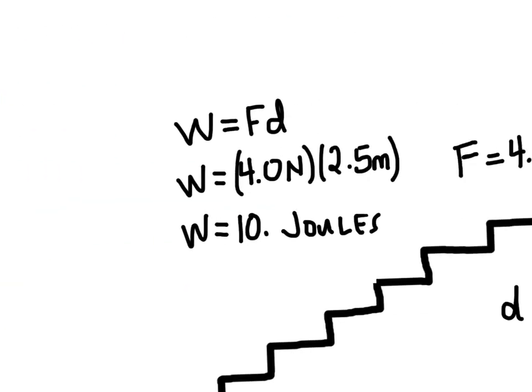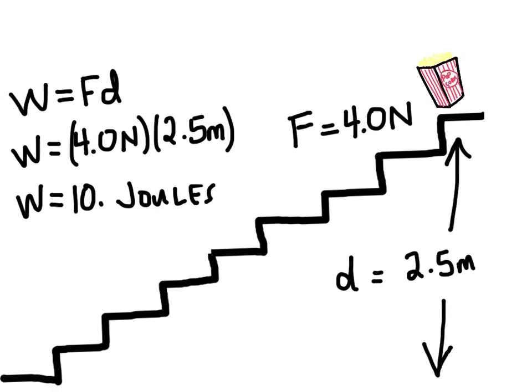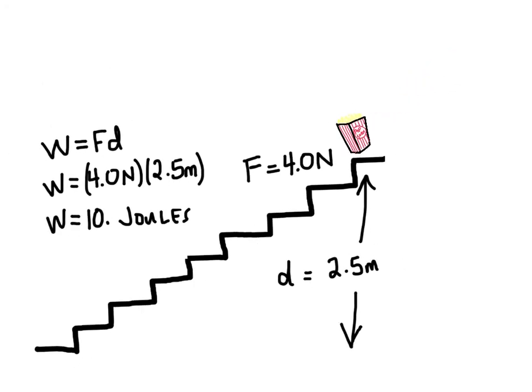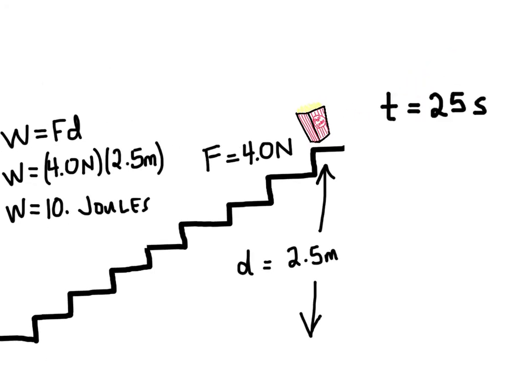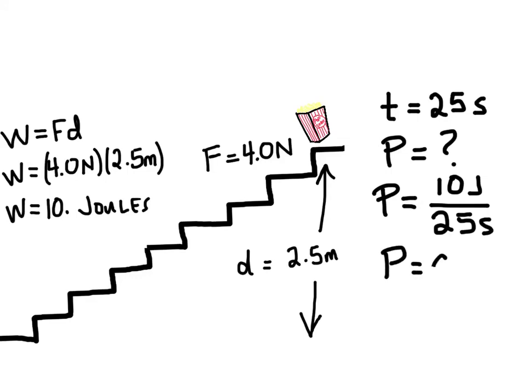So if you were to walk up the stairs, and it took you 25 seconds to get up the stairs, how much power did you have to exert? Well, power is equal to the work done, which we solved over here, 10 joules, over the time of 25 seconds. So your power was 0.4 watts.